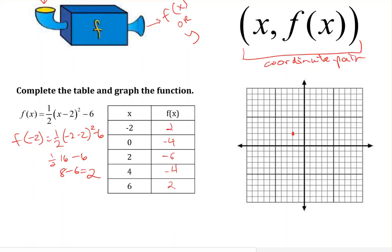0, negative 4. Just go ahead and complete our picture here. 2, negative 6. 4, negative 4. And 6, 2.